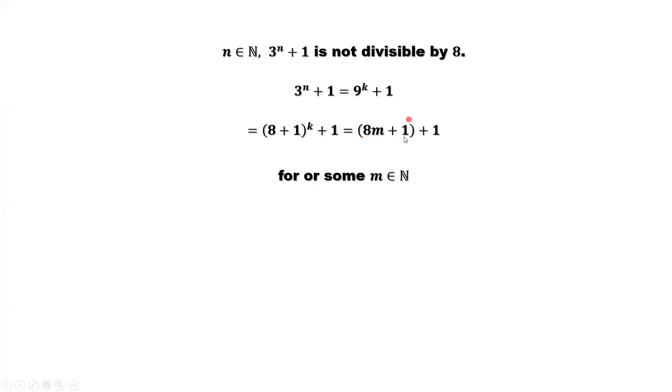This result is from the binomial formula. Simplify this: we have 8m plus 2. In fact, factoring 2 out equals 2 times 4m plus 1. Is this number divisible by 8? You can cancel 2 here. Then is this part divisible by 4? No, because 4m plus 1 is odd.